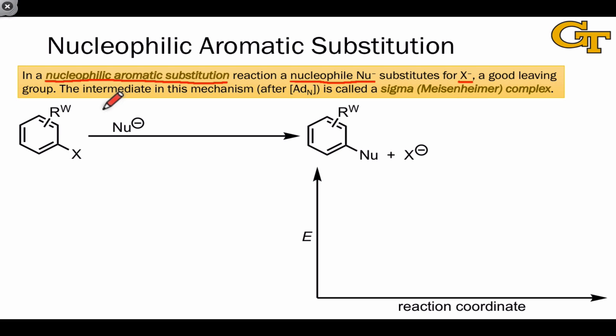This occurs through a two-step mechanism, not SN2 and not SN1. It doesn't involve a carbocation. In the first step, the nucleophile adds to the aromatic pi system, forming an anionic intermediate. This intermediate is also referred to as a sigma complex because a new sigma bond is formed between the nucleophile and the aromatic.